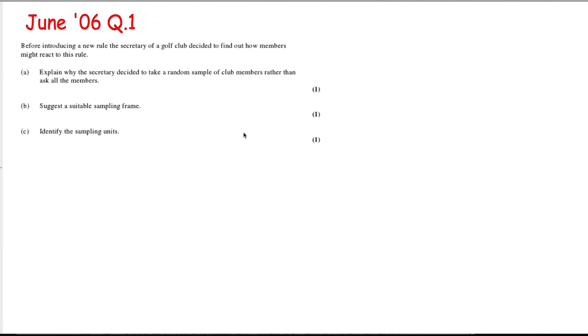June 06: before introducing a new rule, the secretary of a golf club decided to find out how members might react to this rule. Explain why the secretary decided to take a random sample of club members rather than ask all members. It's fairly straightforward. If I ask every single member, it's going to take a lot of time and probably cost me a lot of money. So it's going to save time and money. Suggest a suitable sampling frame: a list of all members from the club. And finally, identify the sampling units: the members of the club.